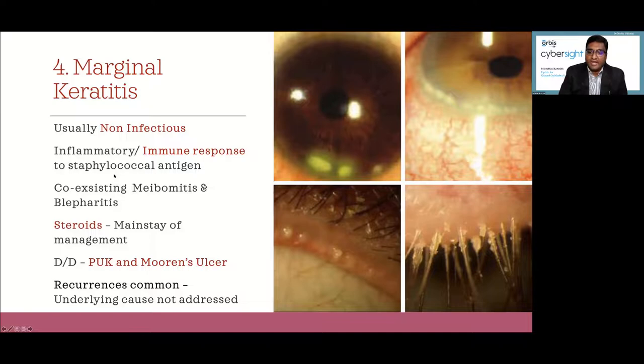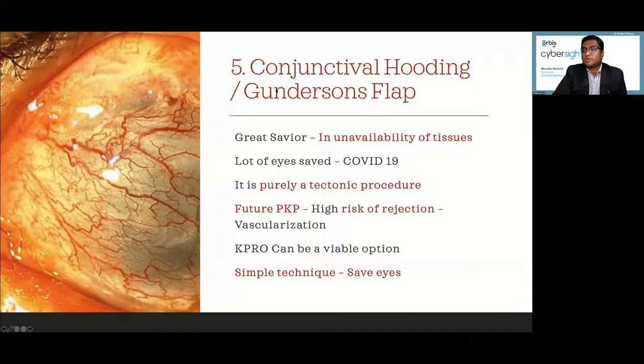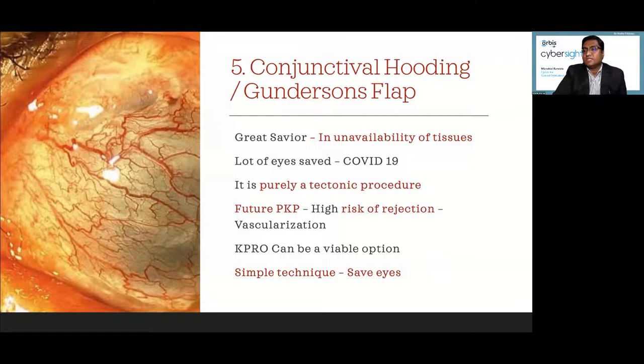Conjunctival hooding or Gundersen flap is a great savior — a purely tectonic procedure — especially during COVID times when many eyes were saved. The problem is that future optical grafts carry high rejection risk due to vascularization throughout the bed. KPRO can be a viable option for visual restoration in such cases. All of us should know this simple technique that saves eyes when tissues are not available.